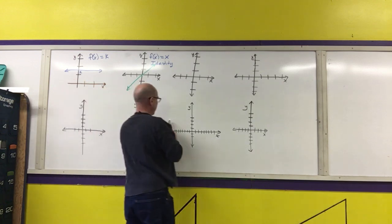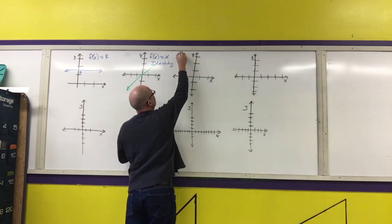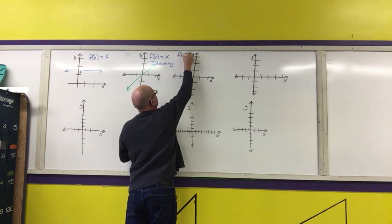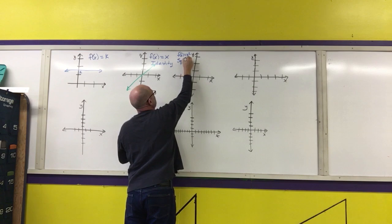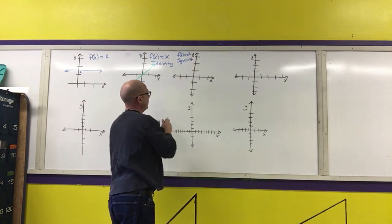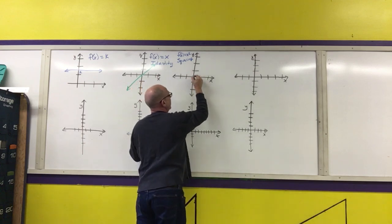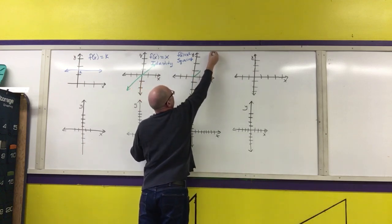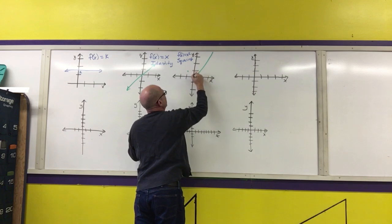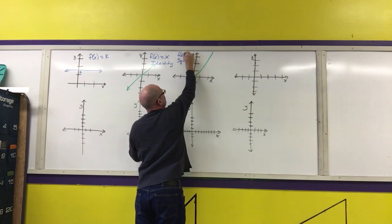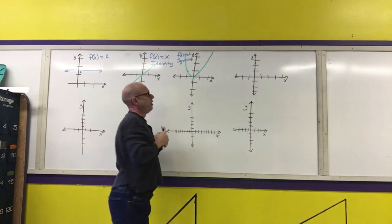The next parent function is f(x) = x², called the squaring function. It's a concave-up parabola. Key points: (0, 0), (1, 1), (2, 4), and (-1, 4). That is the squaring function.